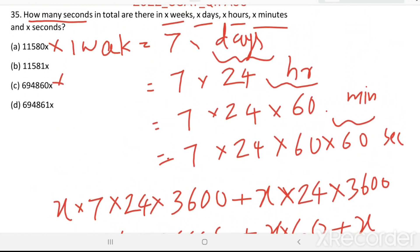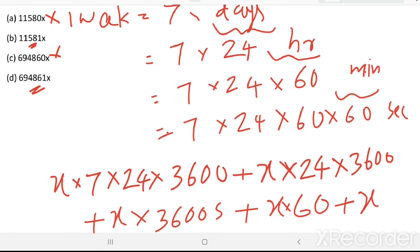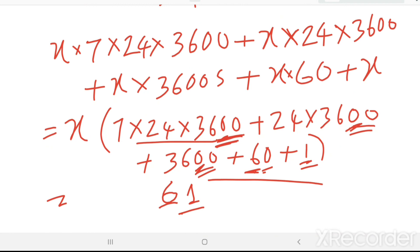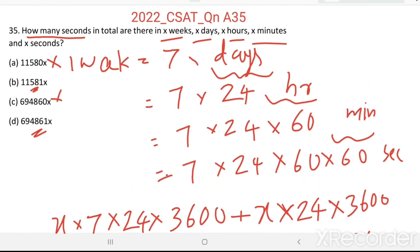So from the given options, here tens place digit is x, 8 and here it is 6. Therefore, adding all these, we get 694861x, option D is the right answer.